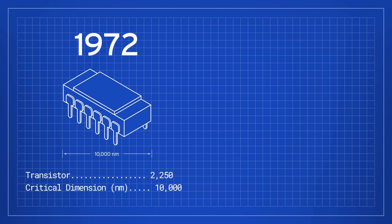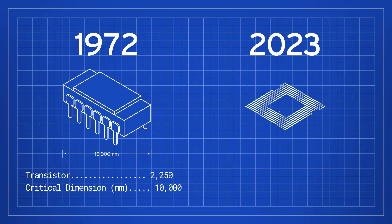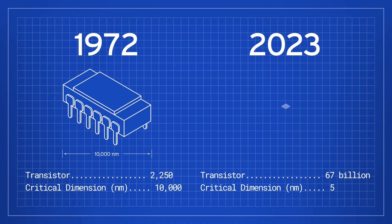Compare that to an advanced processor launched in January 2023, which contains 67 billion transistors on the order of 5 nanometers each.